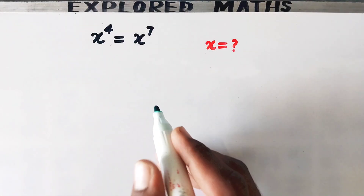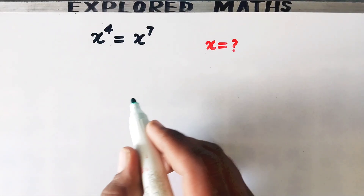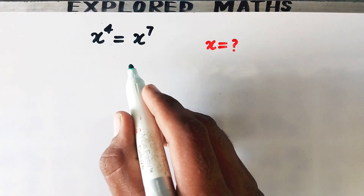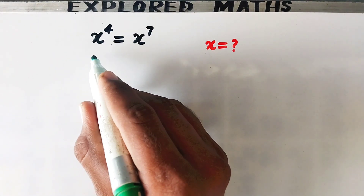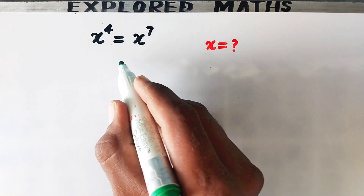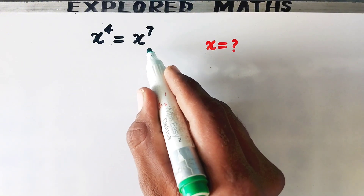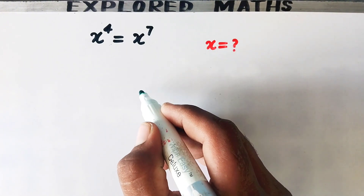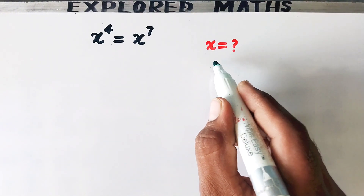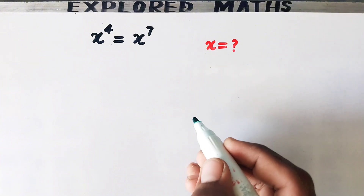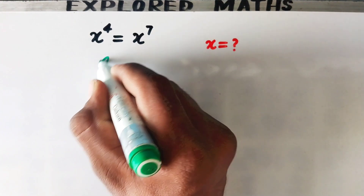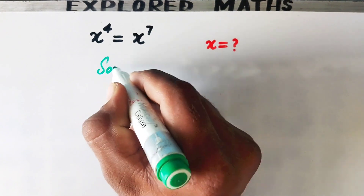Hello everyone and welcome. We will solve this algebraic problem: x to the power 4 equals x to the power 7. What is the value of x? Let us see its solution.